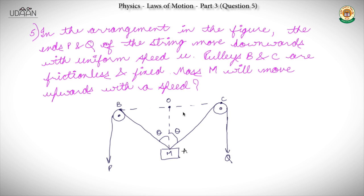Now, let's take the speed of the mass M. How do we do this question? First of all, let's say AB is equal to AC is equal to R, and OB is equal to OC is equal to X.